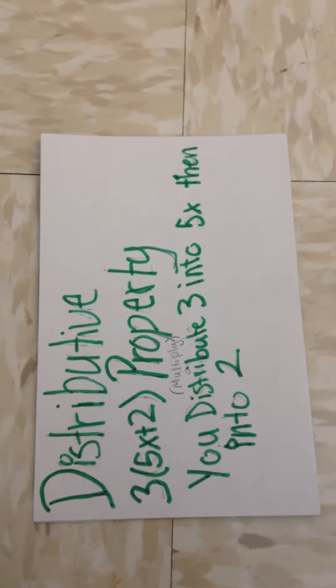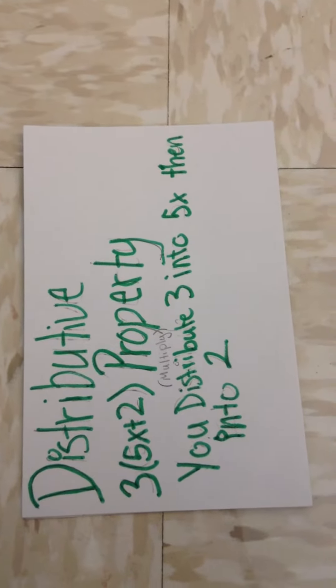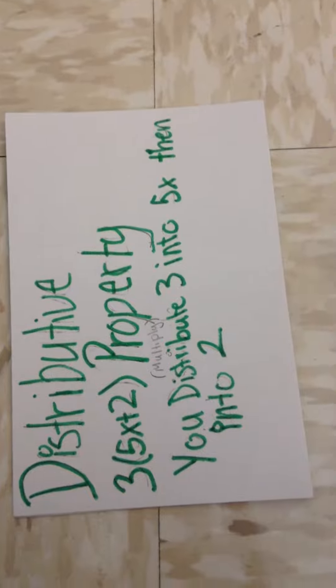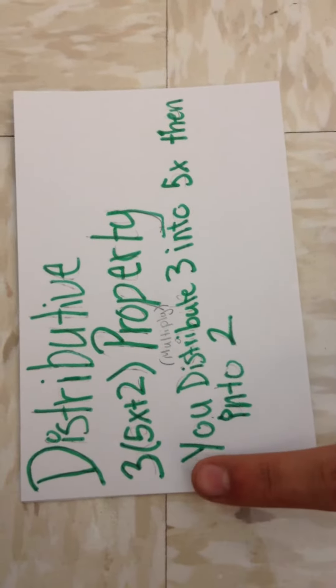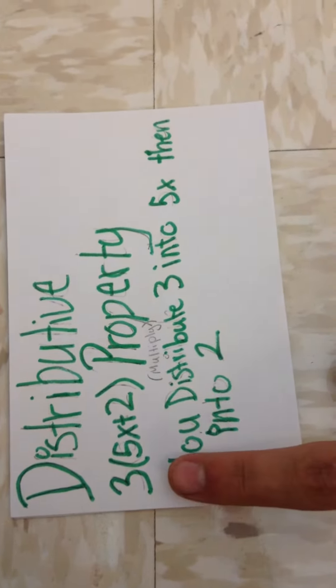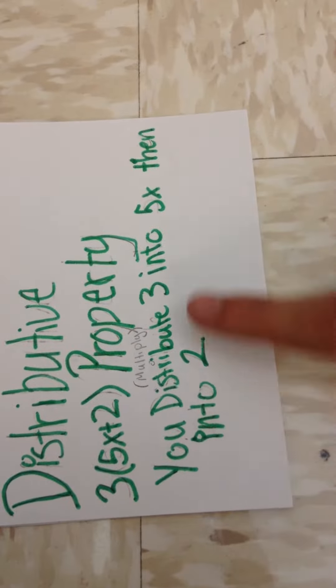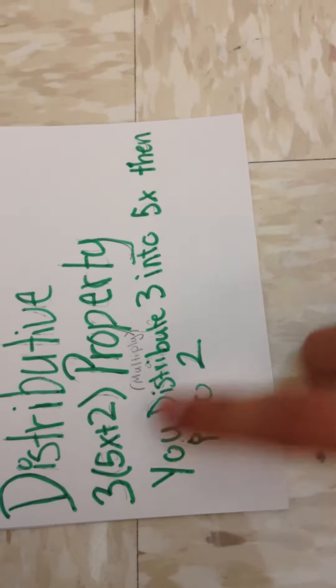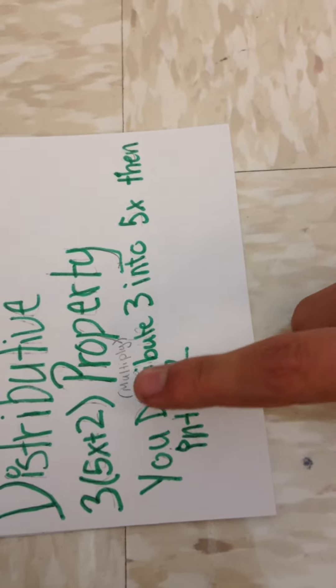The distributive property. And here's an example of the distributive property where you distribute the number on the outside of the parentheses to the two numbers on the inside. So you distribute on this one 3 to 5x and then to 2.